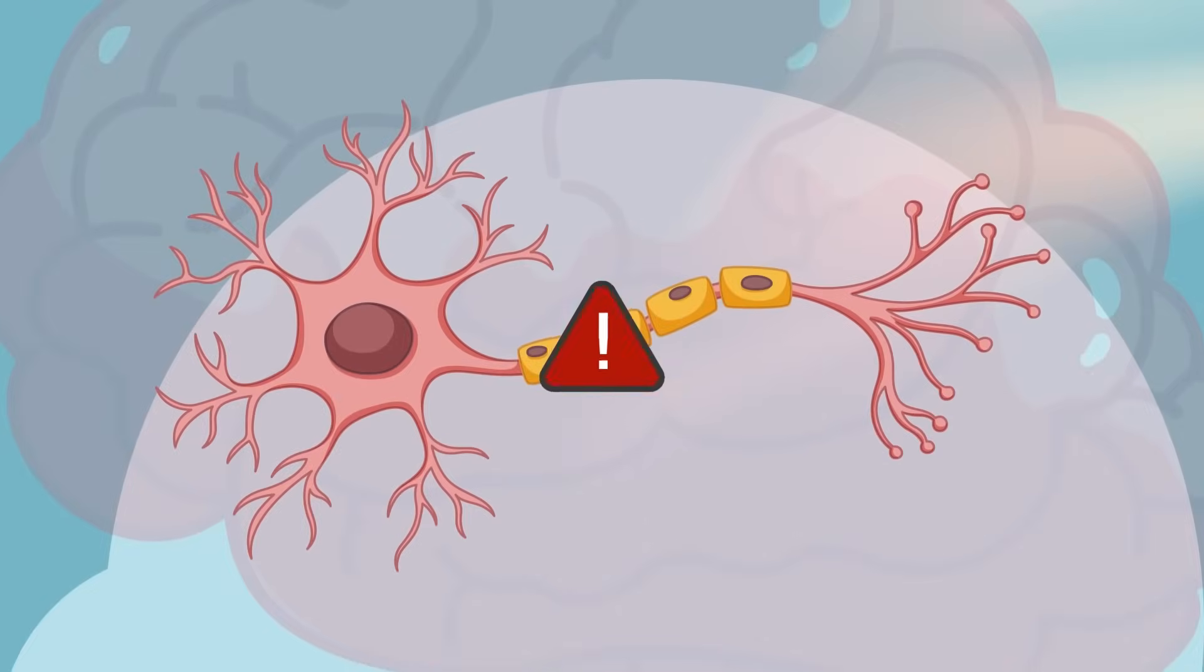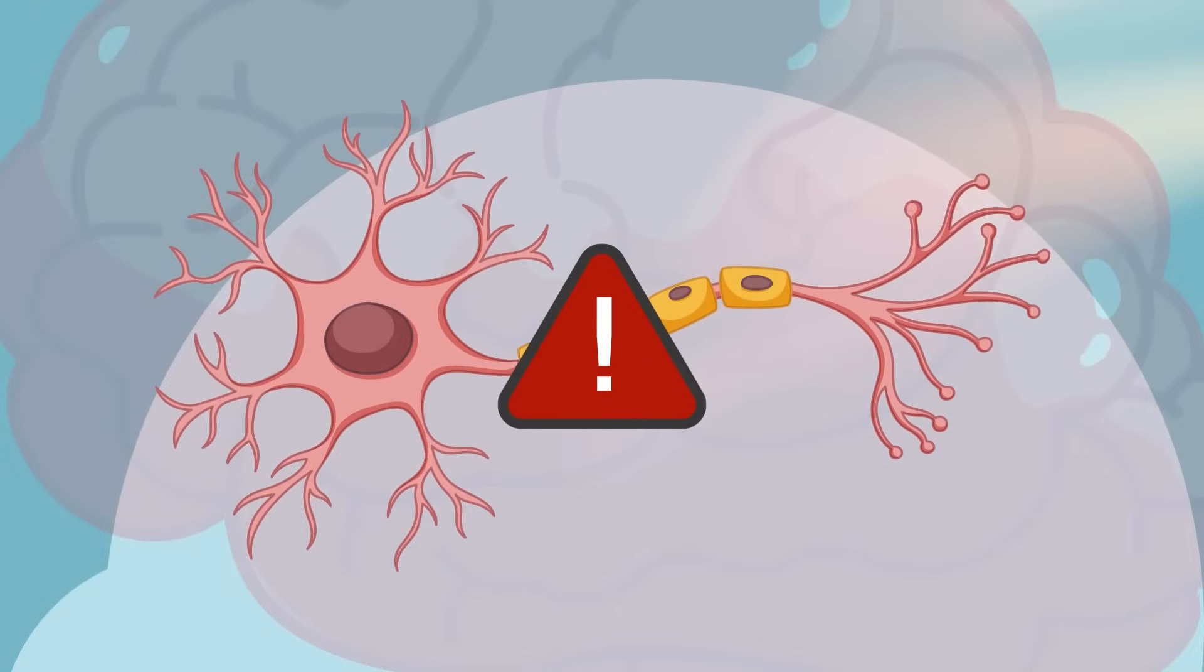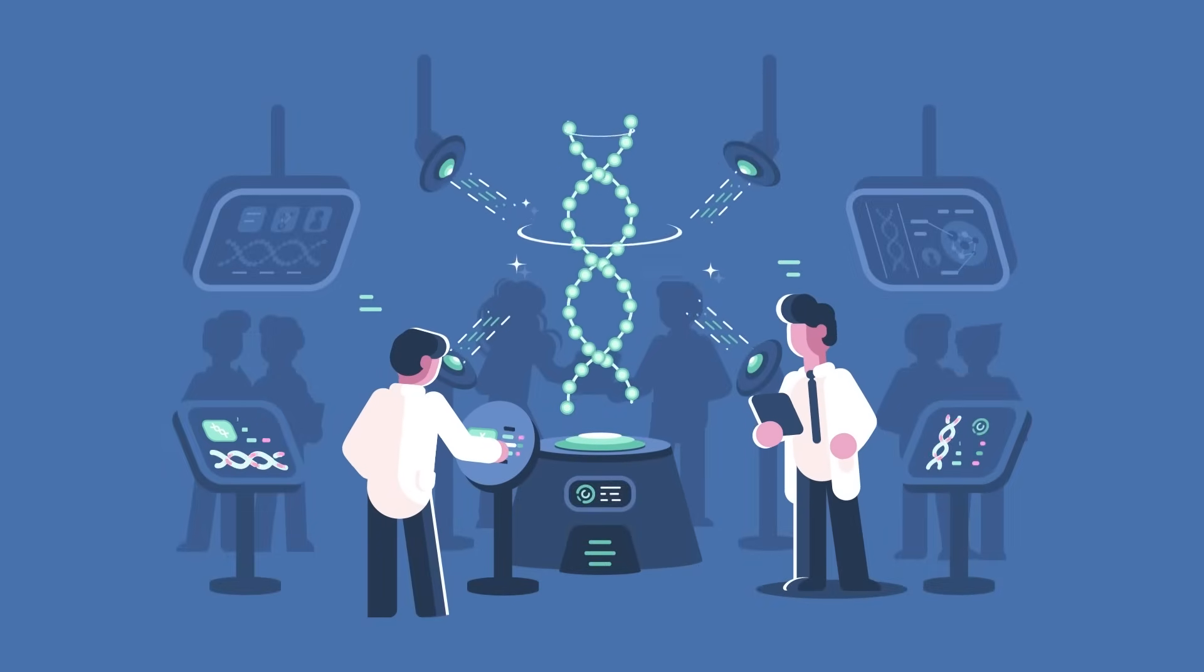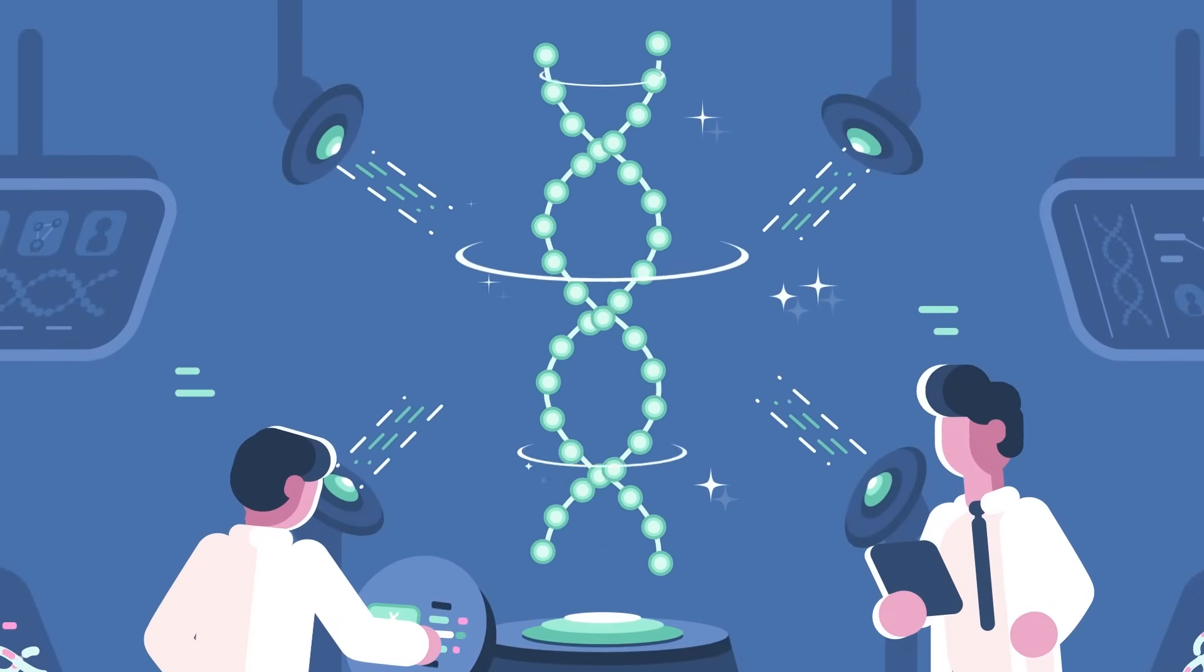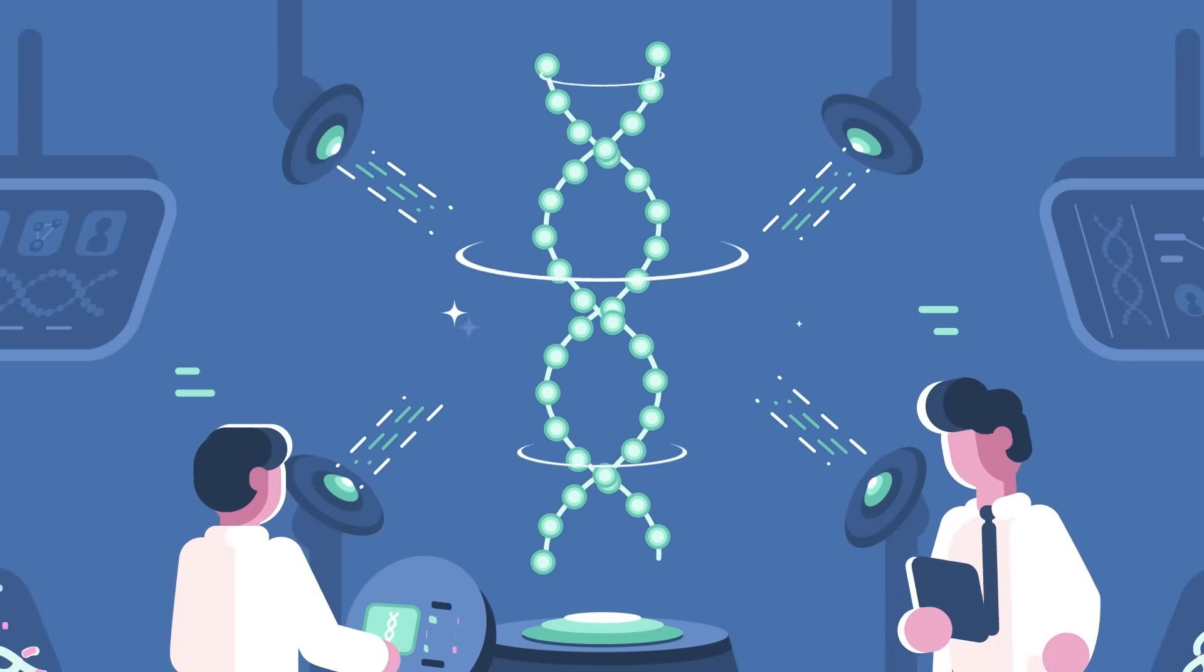You may be wondering what causes these brain cells to die and how does someone develop Parkinson's disease? Scientists don't know for sure what causes Parkinson's, but they believe genetics play a role in about 10 to 15% of the cases.